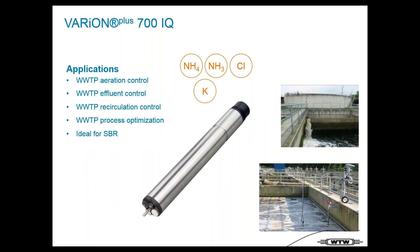The Varion Plus is our ISE measurement sensor for ammonium and nitrate. The main application is in wastewater treatment plants — in the aeration zone, for effluent control, recirculation control, and process optimization. It is ideal for SBR reactors. An important point is that this technology is specifically designed for wastewater treatment — not lab technology.